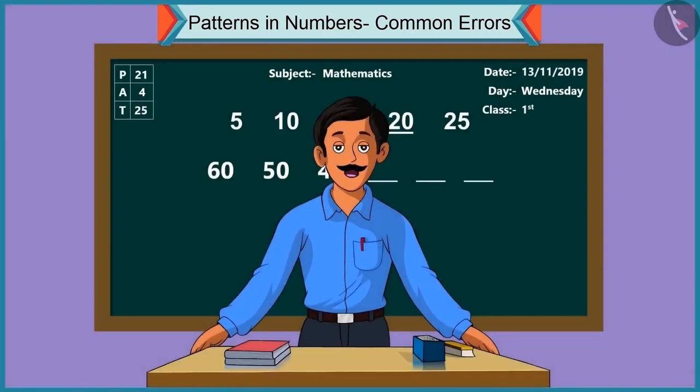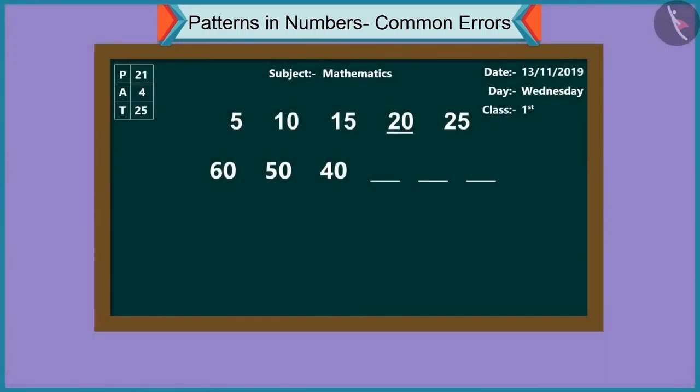Come, let us see the next pattern. Now let's complete this pattern. To continue this pattern, after forty comes forty-one, forty-two, forty-three.